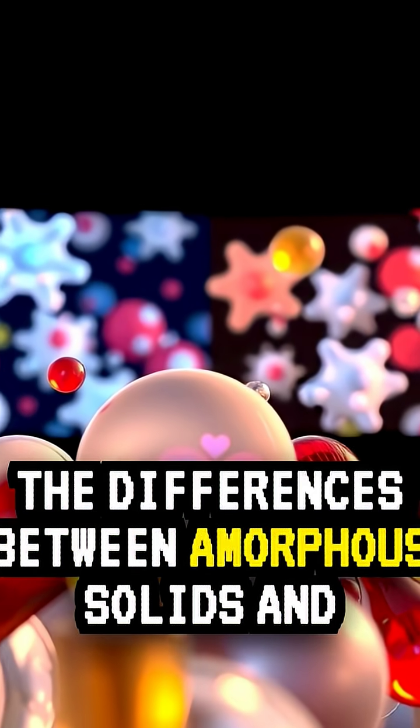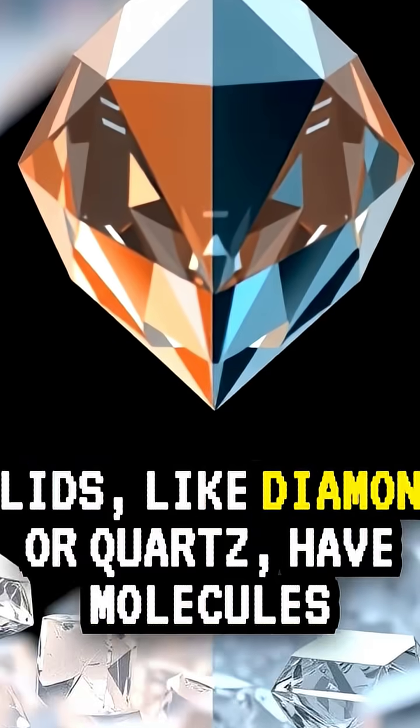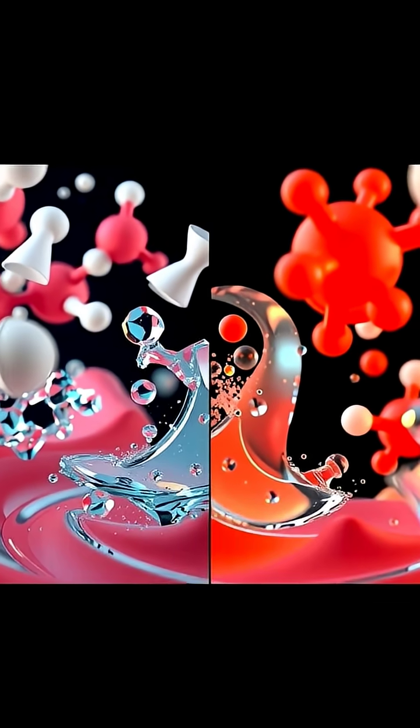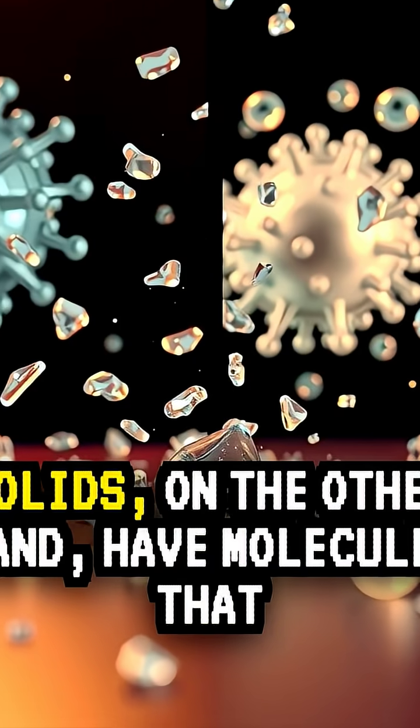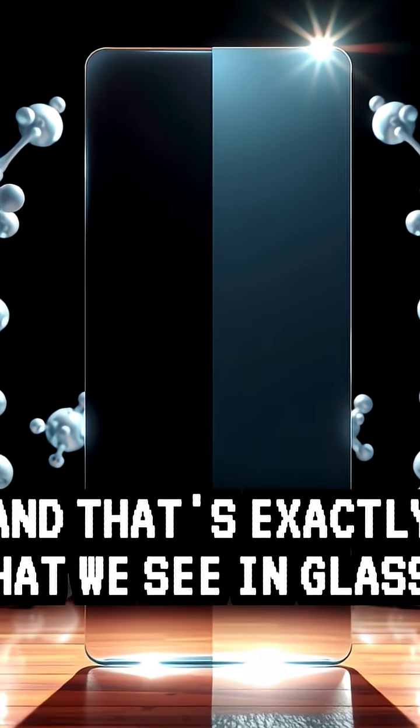The differences between amorphous solids and crystalline solids are really important. Crystalline solids, like diamonds or quartz, have molecules that are arranged in a repeating pattern. Amorphous solids, on the other hand, have molecules that are all jumbled up. And that's exactly what we see in glass.